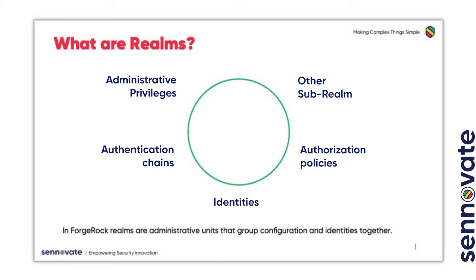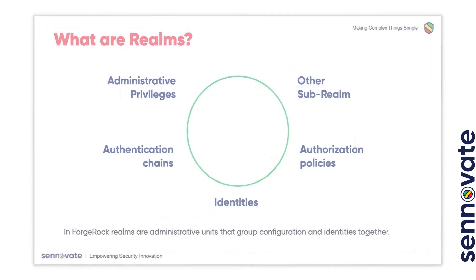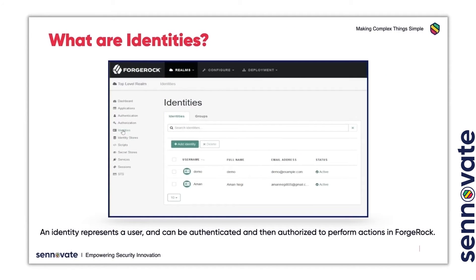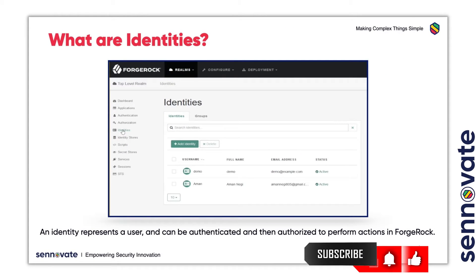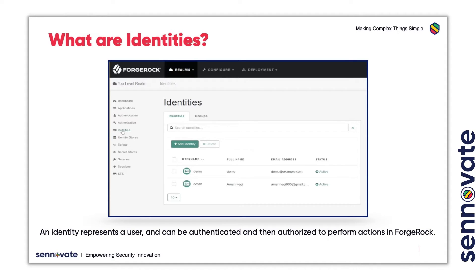As Realms consist of group configuration and identities, let's look at what identities are. An identity represents a user that can be authenticated and then authorized to perform actions in ForgeRock. Each identity can be associated with one or more policies. Policies determine what actions a user, group, or member of a user group can perform on the ForgeRock resources and under what conditions it can be used.